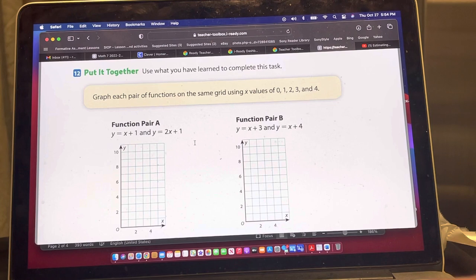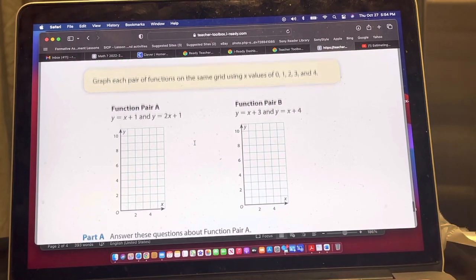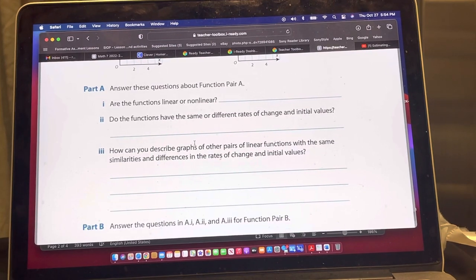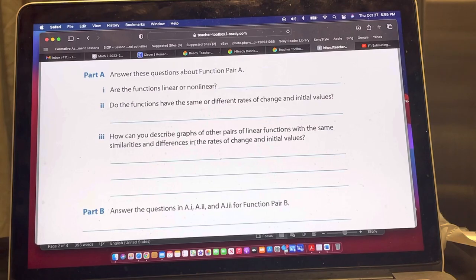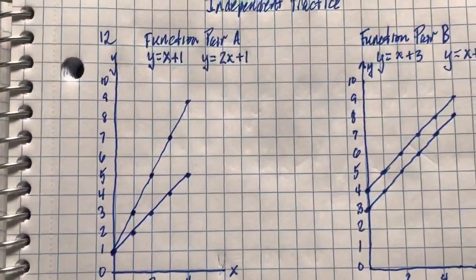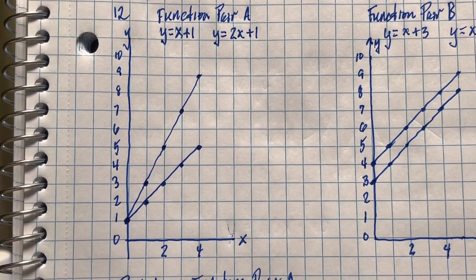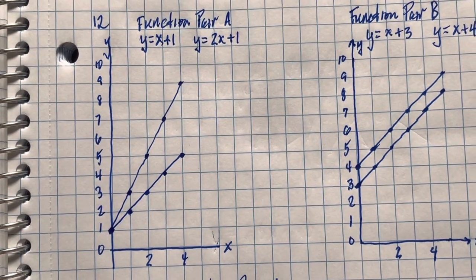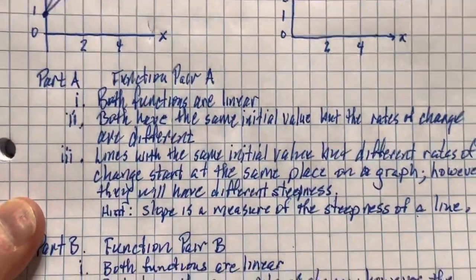For independent practice, we have two pairs of functions. Graph each pair on the same grid using x-values of 1, 2, 3, and 4, then answer: are the functions linear or non-linear? Do they have the same or different rates of change and initial values? The first pair is y = x + 1 and y = 2x + 1. Notice they both start at plus one — that is the initial value. The less steep line is y = x + 1 and the steeper line is y = 2x + 1.